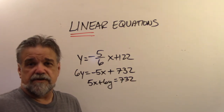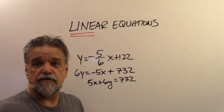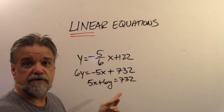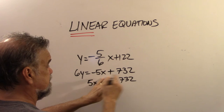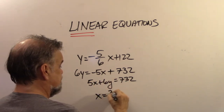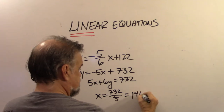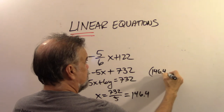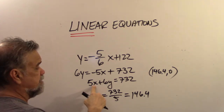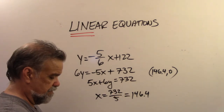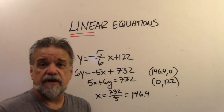I don't like standard form much because I can't just look at it and tell what the slope is. However, it's still fairly useful — for example, finding intercepts is really fast. To get the x-intercept, set y = 0: 5x = 732, so x = 146.4, giving the point (146.4, 0). For the y-intercept, set x = 0: 6y = 732, so y = 122, giving the point (0, 122). Standard form is good for finding the intercepts.